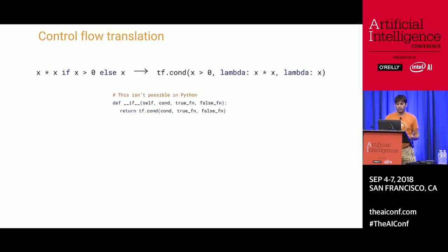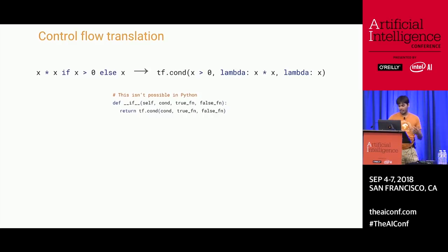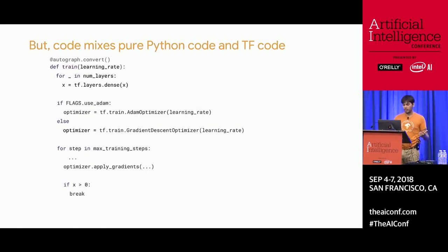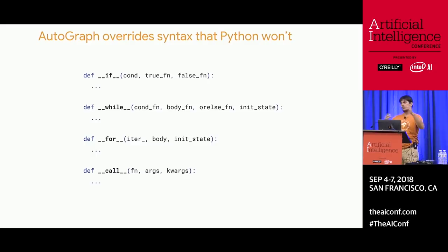But what Python doesn't let you do is override the behavior of the if operator. There's no way in Python to override __if to run some code you want. Ideally, if Python let us override __if, we would be able to make all sorts of graph rewrites that take control flow into consideration. Sadly, we can't. So what we're trying to do is override the syntax that Python doesn't let us override.